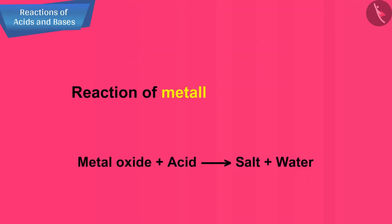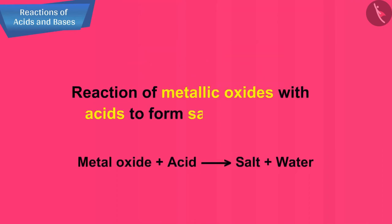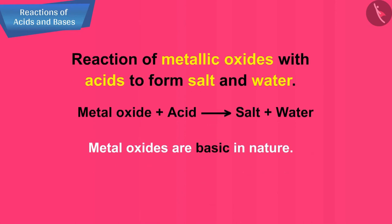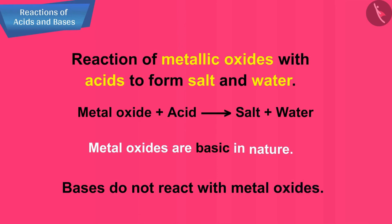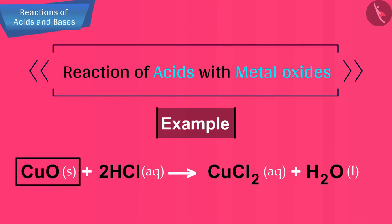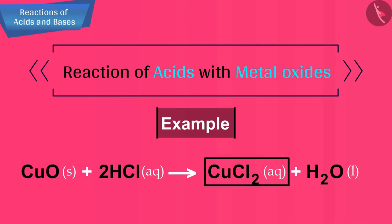The next type of reaction is the reaction of metallic oxides with acids to form salt and water. Metal oxides are basic in nature, so bases do not react with metal oxides. For example, copper(II) oxide is a metal oxide — add dilute hydrochloric acid to it and it reacts to form copper(II) chloride and water.